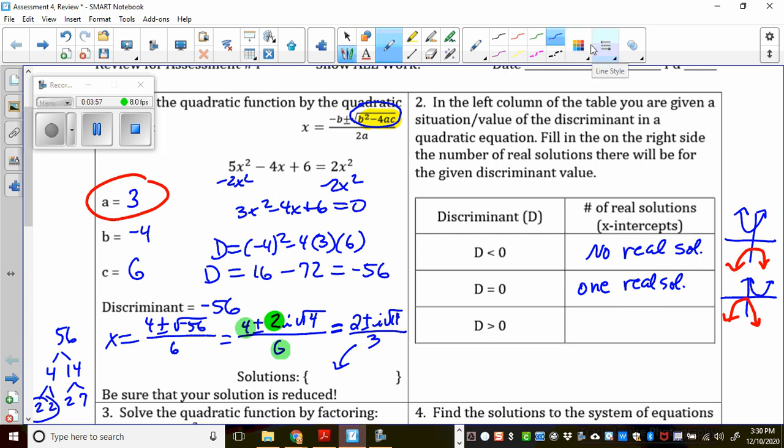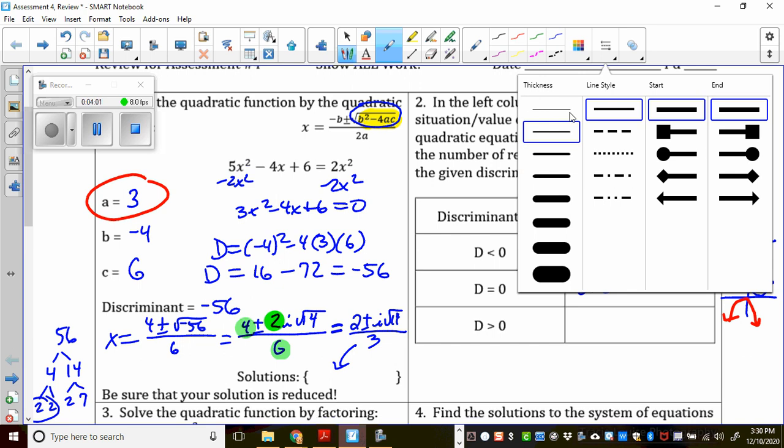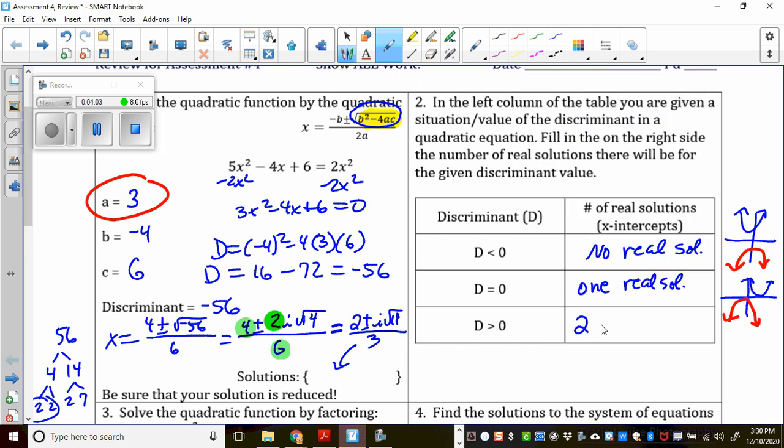Alright, and then the discriminant is greater than 0. That's your most normal situation, I guess you could say. So that's when you have two real solutions. And so that's when you see a parabola that is crossing the x-axis in two places. It could be both on one side or the other. Maybe it's over here, facing down. But whatever, it has two x-intercepts.